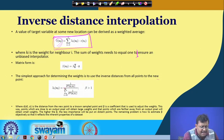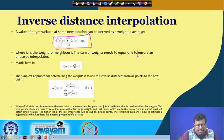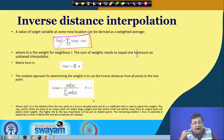Lambda(S0) can be calculated as 1 divided by d-beta(S0, Si), divided by a normalizing term, where beta is greater than or equal to 1. Here d(S0, Si) is the distance from the new point to a known sample point, and beta is the coefficient used to adjust the weights. Points close to an output pixel will obtain large weights, while points further away obtain small weights.